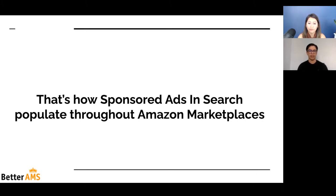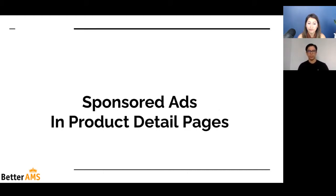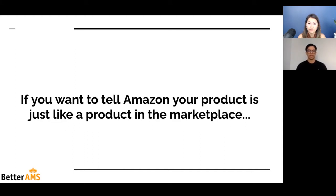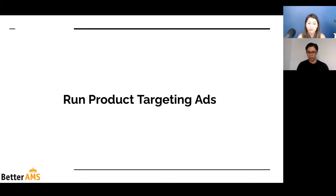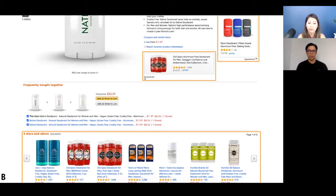That's how sponsored ads in search populate throughout Amazon marketplaces — whether it's Amazon Mexico, Canada, or United Kingdom, it looks the exact same way. Now let's talk about sponsored ads in product detail pages. If you want to tell Amazon your product is just like a product in the marketplace, you have to run product targeting ads. When you convert on an ASIN you're targeting, Amazon will give you some index juice because you're telling Amazon your product is similar or can complement that product. So don't leave product targeting for last — it would be part of my initial campaigns when launching a product.